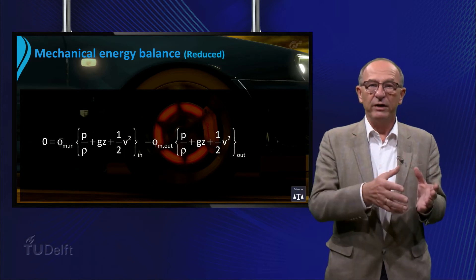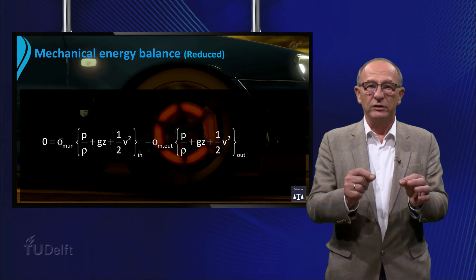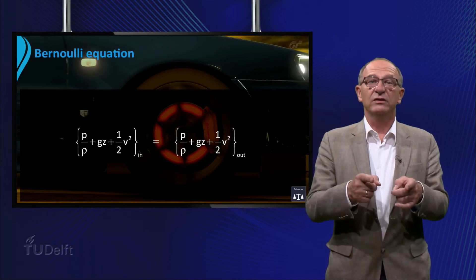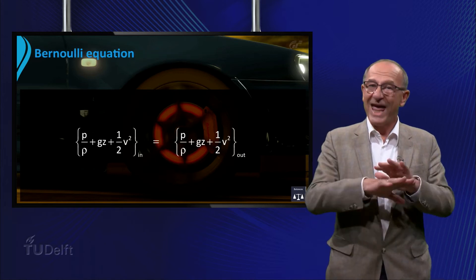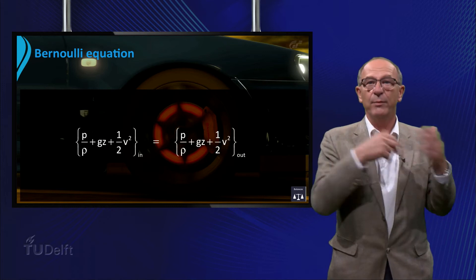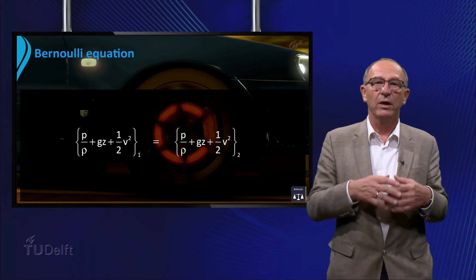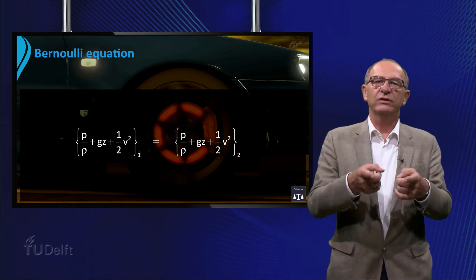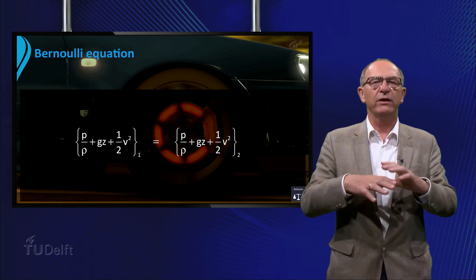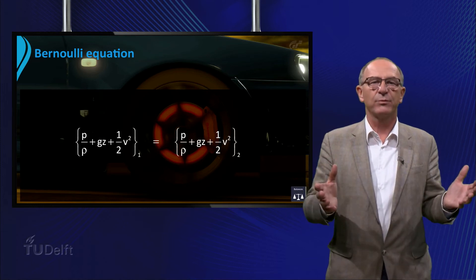Dividing by the mass flow rate gives us the following equation. This equation is valid for any point between the inlet and the outlet of the system, and is often used to explain or solve many engineering problems.